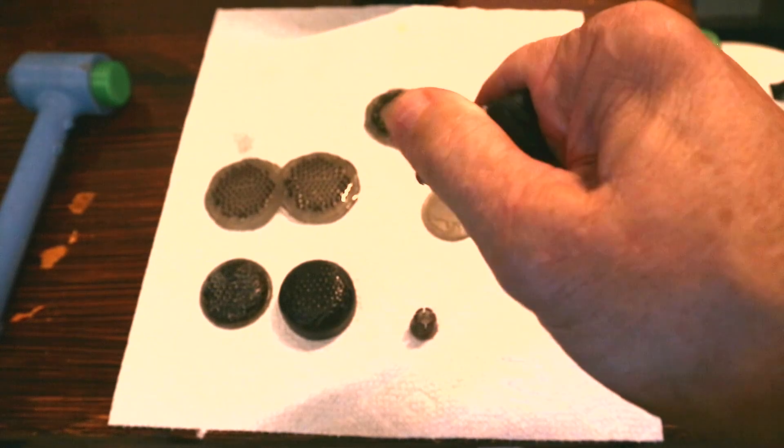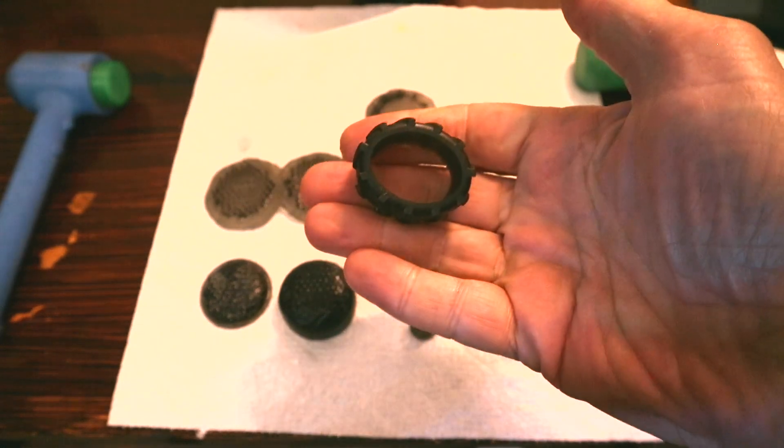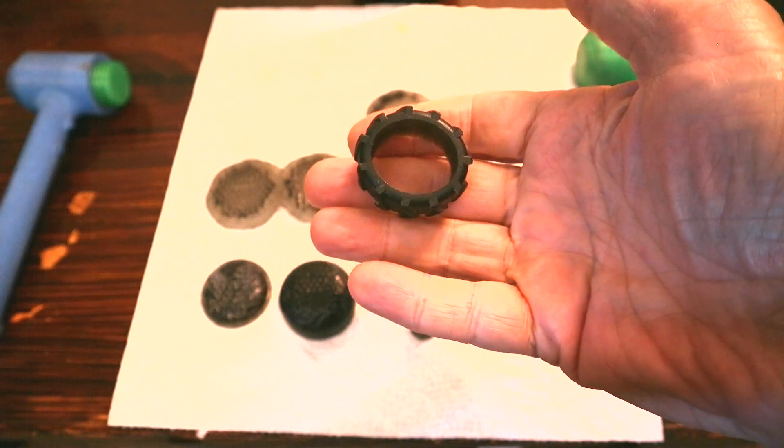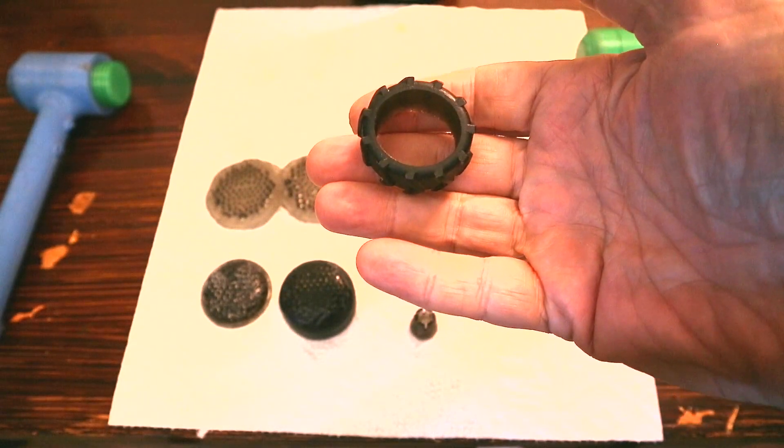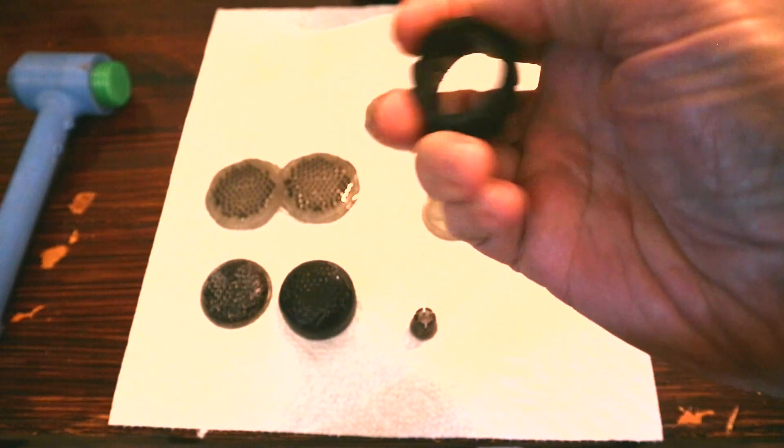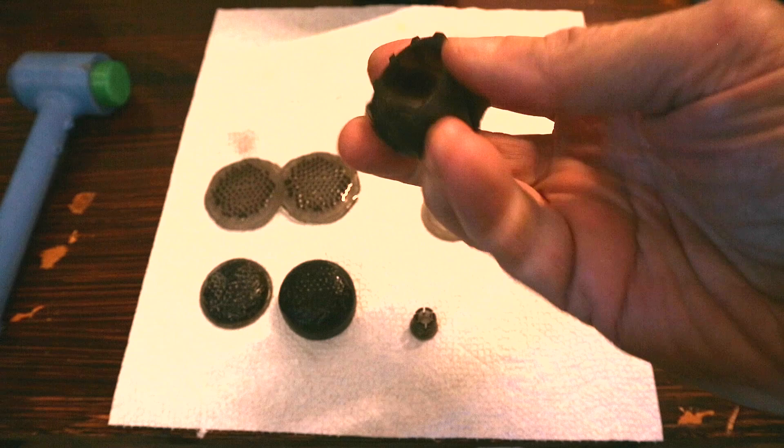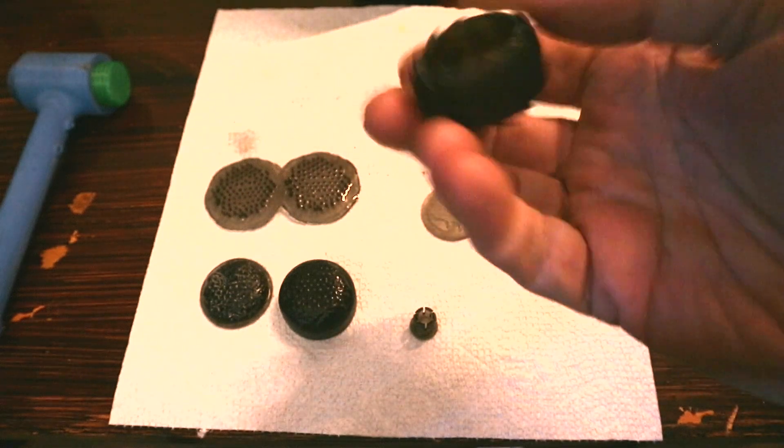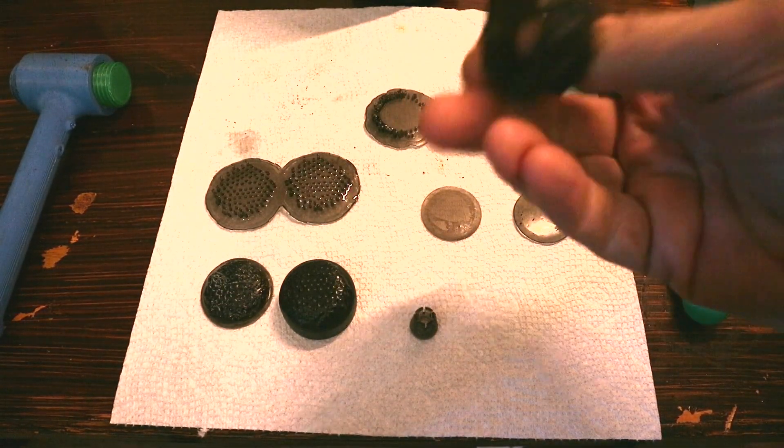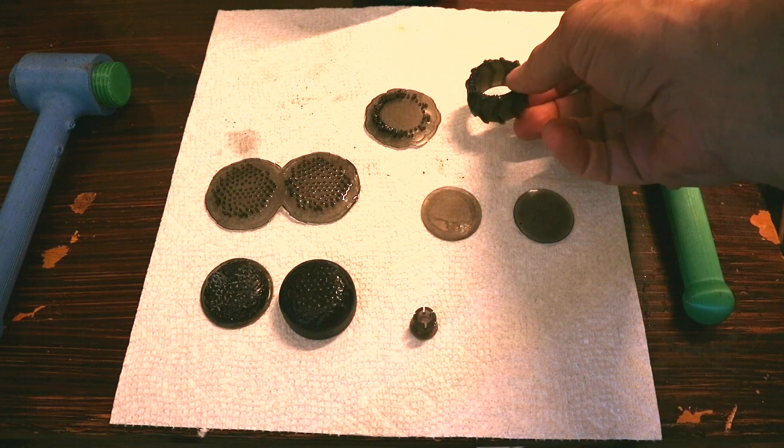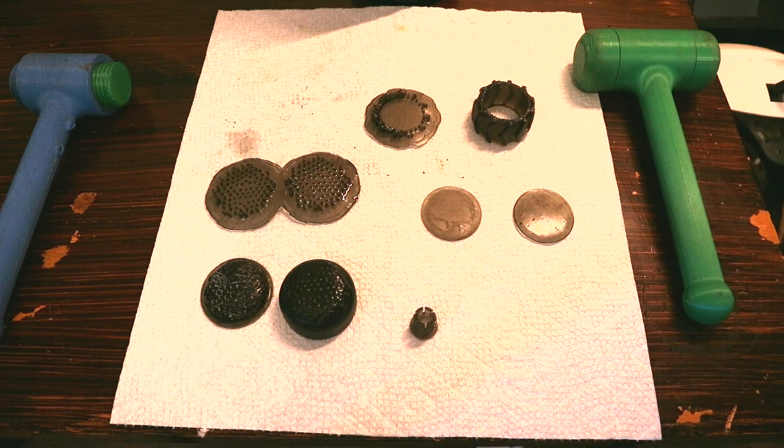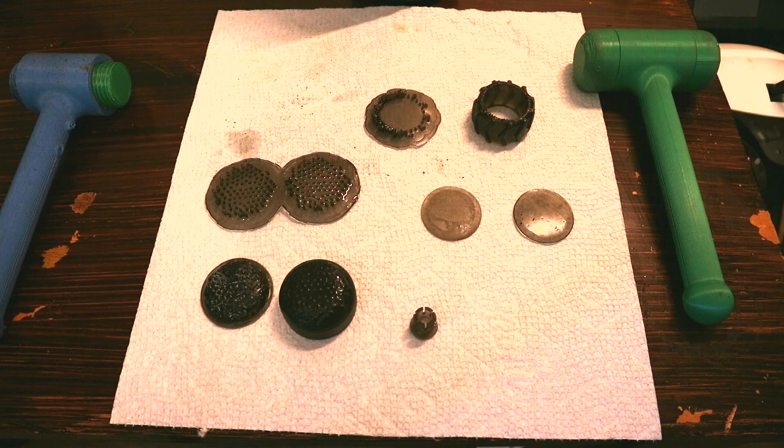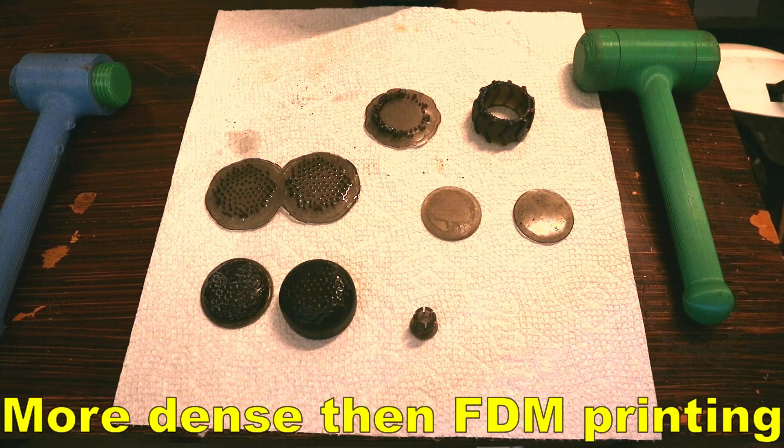But note how slowly it returns to its original shape. It's not like TPU, which TPU returns quite quickly. This is a little slow to return to its original shape. It just feels more dense than TPU printed on an FDM filament. And that might just be the process. Resin just makes it more dense than 3D printing does.